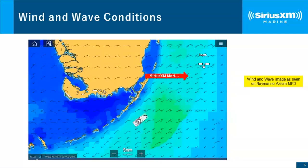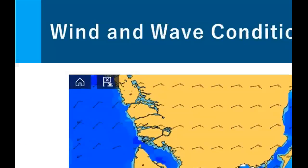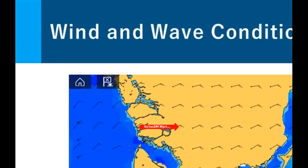To recap reading wind barbs for speed: a wind barb with one long bar indicates 10 knots; one long bar and one short bar, like the letter F, indicates 15 knots; two long bars indicates 20 knots. The long shaft indicates wind direction, and the speed indicators are toward where the wind is coming from.